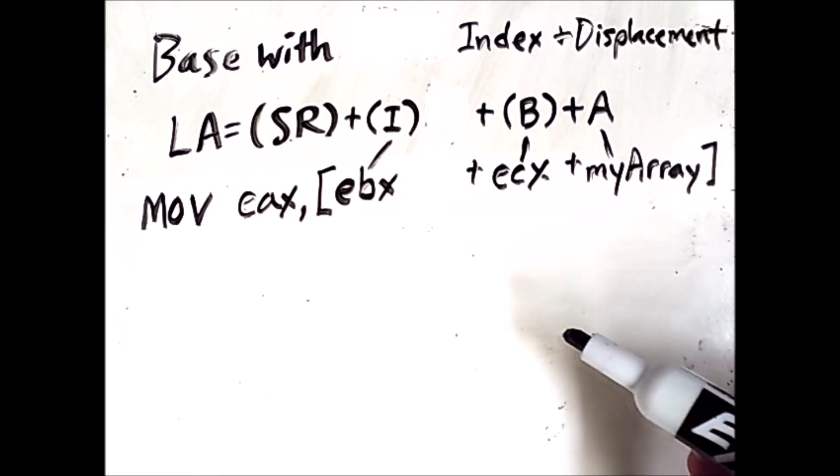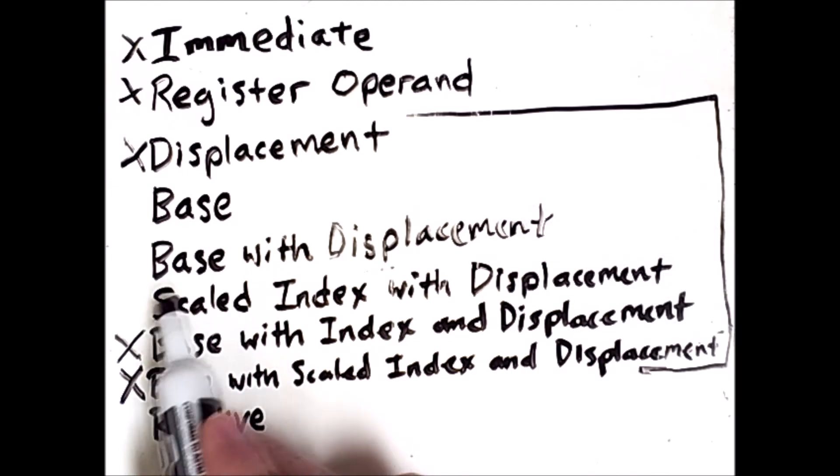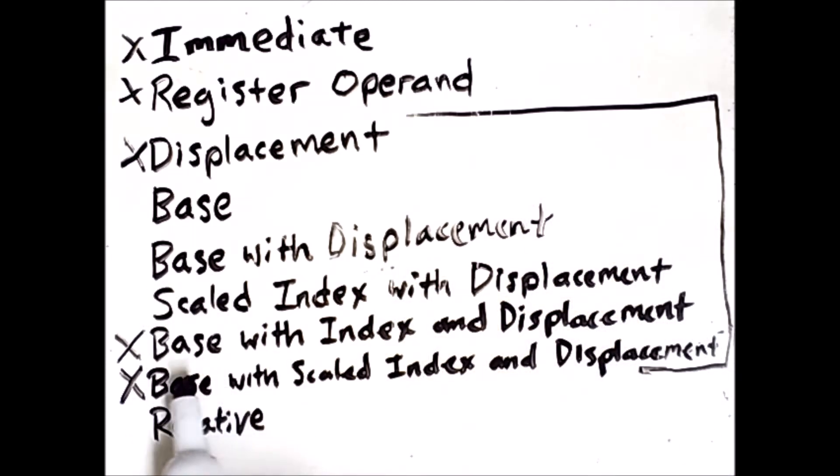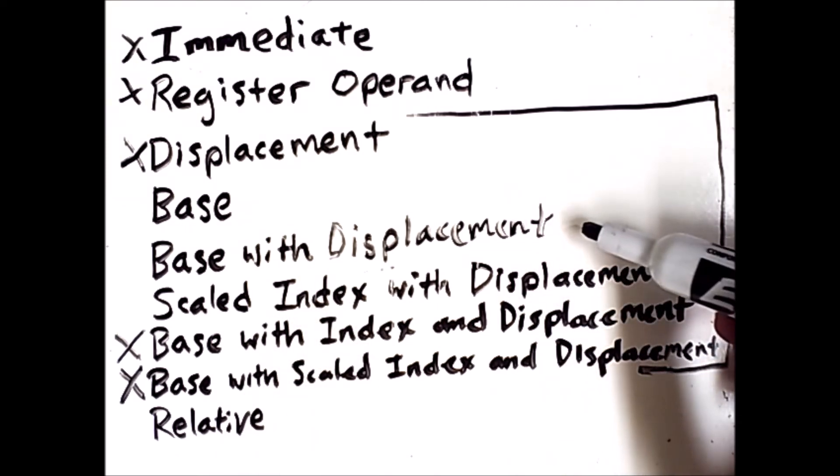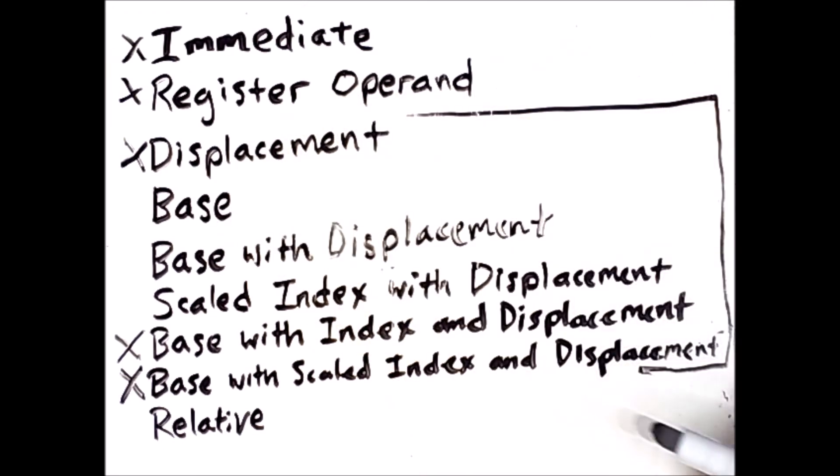Now, instead of removing the scale factor, in the scaled index with displacement, we remove the base register. So for this one, we will keep the scale factor and remove the base register. And for the option above that, base with displacement, we start from here and then remove the index. So here, we have no scale factor, no index, but we do have a base and a displacement. And then finally, at this top one, we have only a base.